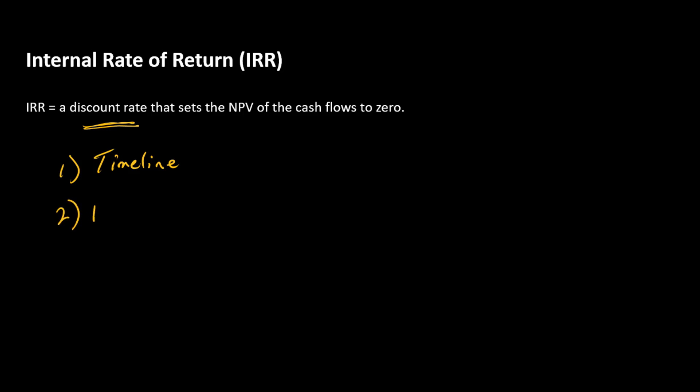Then we want to write down a formula for the NPV. Whatever the cash flows are, write down in simplest terms possible the formula that will get you to the NPV. Third, set that formula, whatever it is, equal to zero.